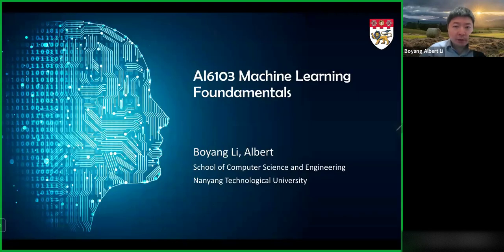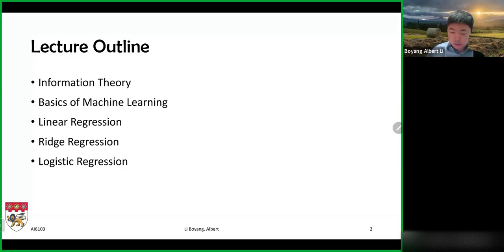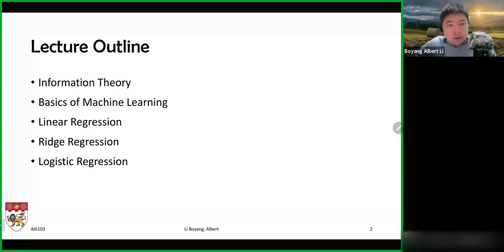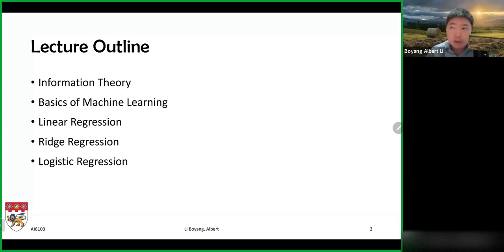Welcome to another session. This week we'll talk about machine learning fundamentals. Here's an outline of today's content: the first topic is information theory. We have spent quite some time talking about the mathematical foundations of modern machine learning, discussing linear algebra and probability theory. Today we're going to spend a little time on the last piece of mathematics we will cover in the entirety of the course.